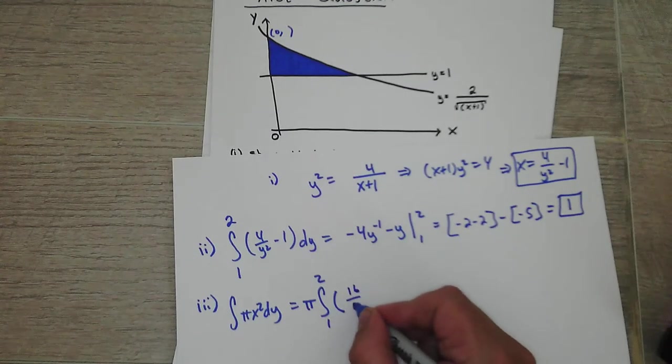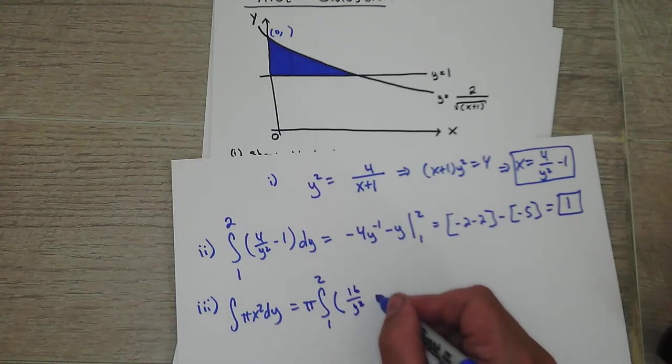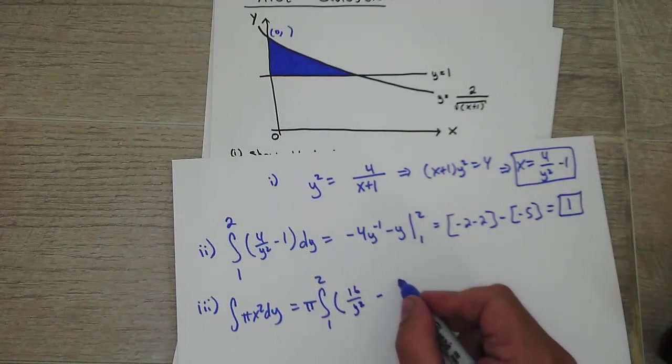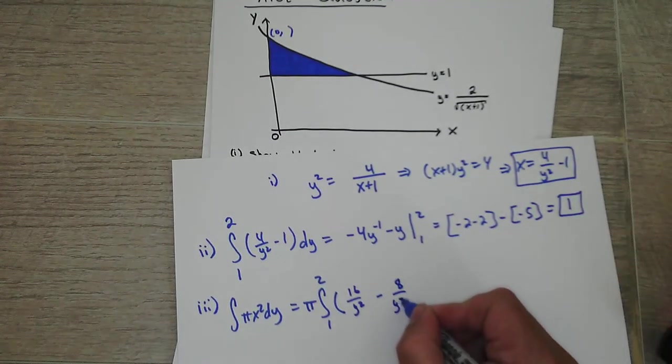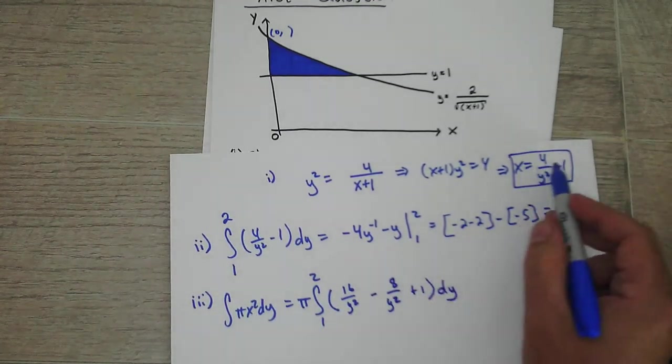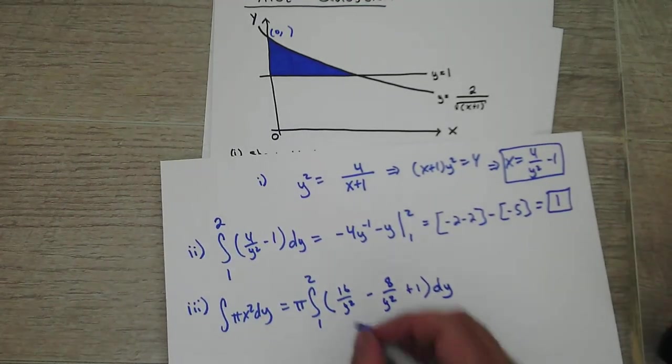So that gives me 16y to the 4th minus - so foil that out - minus 8 over y squared plus 1. Okay? So we have to square the x. That means you have to foil this out. And you should get that.